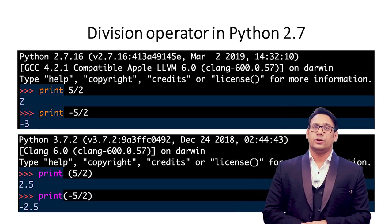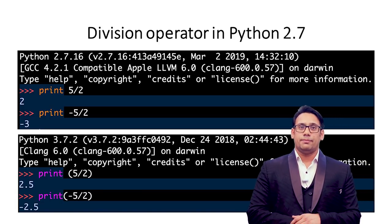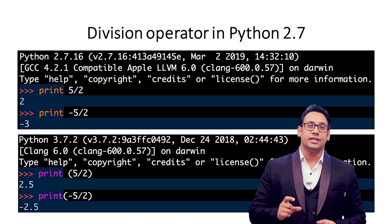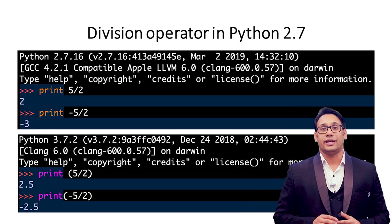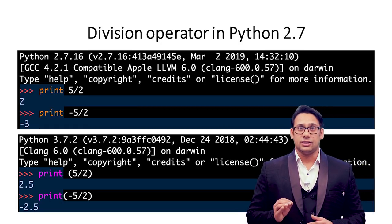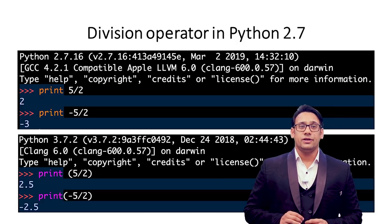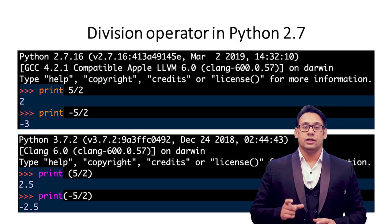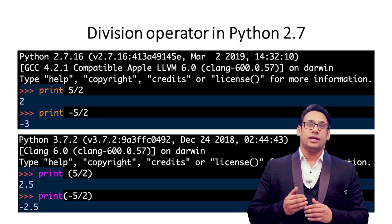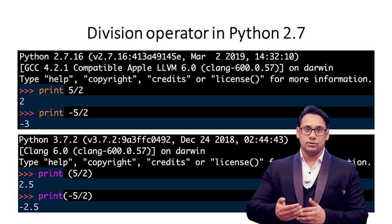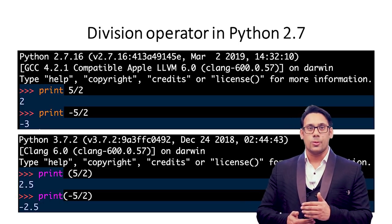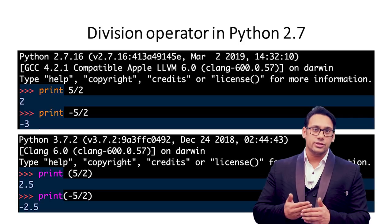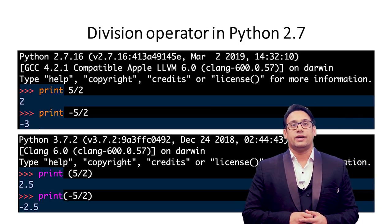Looking at the division operator in Python 2.7: if you do 5 divided by 2, the result is 2, because integer divided by integer gives an integer. So 5 divided by 2 gives 2, and minus 5 divided by 3 gives minus 3. But in Python 3.7, 5 divided by 2 gives 2.5, and minus 5 divided by 2 gives minus 2.5. In Python 2.7 it takes the lower bound — so 5 divided by 2 is 2.5 but the lower integer is 2, and minus 5 divided by 2 is minus 2.5 but the closest lower integer is minus 3.